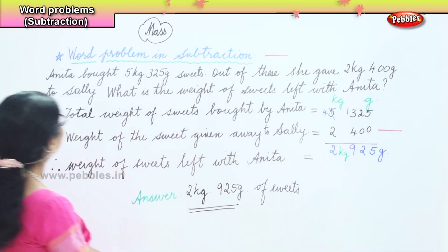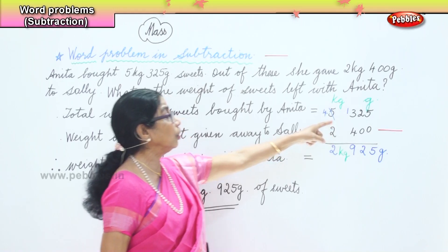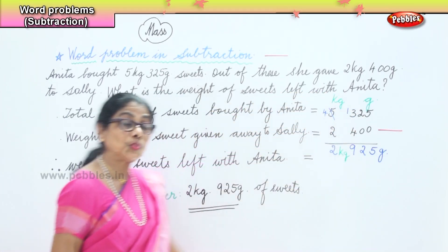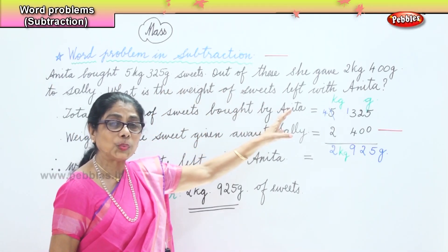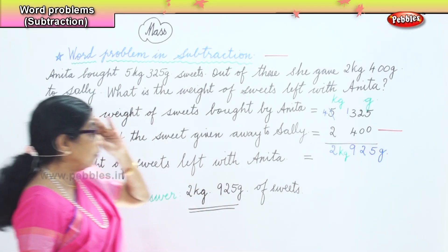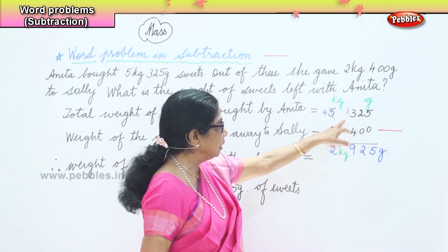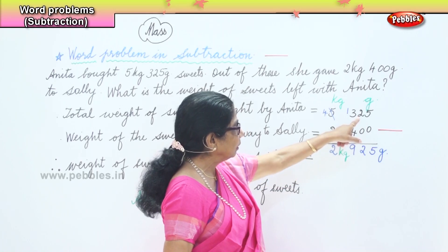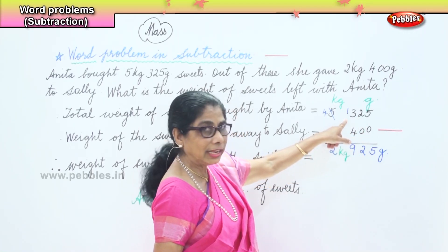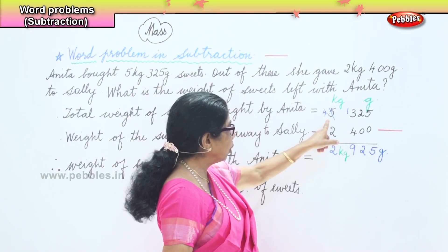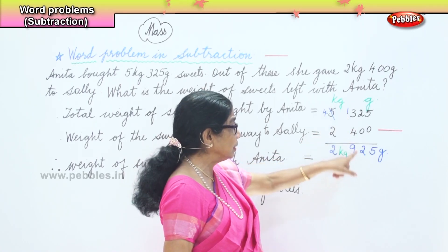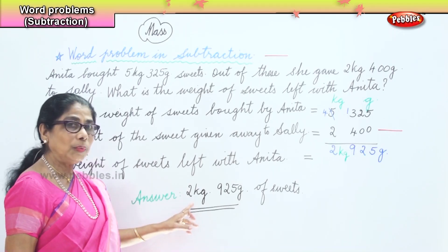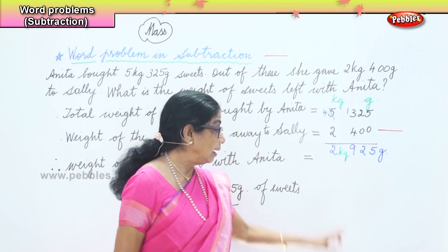So what is given in the problem? Anita bought 5 kg 325 grams of sweets. Then she gave away 2 kg 400 grams of sweets to Sally. The question asks: find the weight of sweets now left with Anita. So 5 kg 325 grams minus 2 kg 400 grams: 5 take away 0 is 5, 2 take away 0 is 2. You cannot take away 4 from 3 since the bigger number is on the bottom, so you borrow 1 and that becomes 13. 13 take away 4 is 9. You are left with 4 kg; 4 take away 2 is 2. So the weight of sweets left with Anita is 2 kg 925 grams.